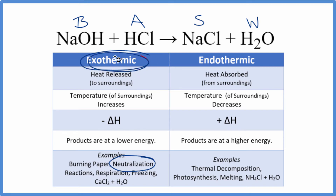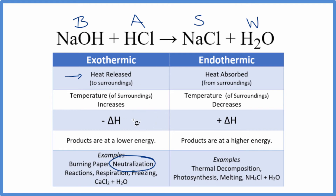Neutralization reactions are exothermic. So NaOH plus HCl is going to be exothermic. When this reaction happens, heat is going to be released into the surroundings — the glass of the beaker, the water — and the temperature of the surroundings is going to increase. We say that it has a negative delta H, so it has a negative enthalpy. If we look the enthalpy up for this reaction, we get negative 57.9 kilojoules per mole, meaning each mole releases 57.9 kilojoules of heat.